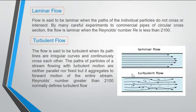The flow is said to be turbulent when its paths are irregular curves and continuously cross each other. The paths of the particles of a stream flowing with turbulent motion are neither parallel nor fixed but it aggregates to forward motion of the entire stream. Reynolds number greater than 2100 normally defines turbulent flow.